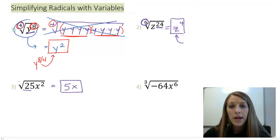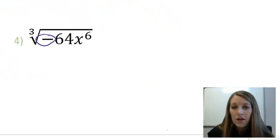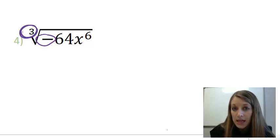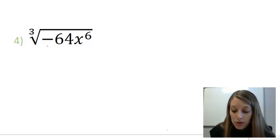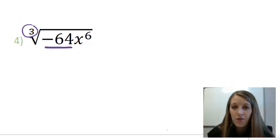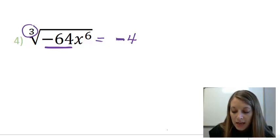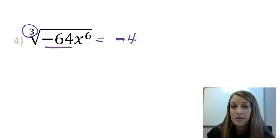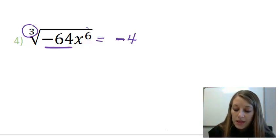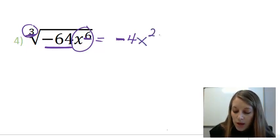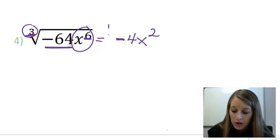In example 4, you might instantly think no answer because I have a negative involved, but that's not true because this is an odd power. I can take an odd power of a negative number. So again, let's just look at it piece by piece. What is the cube root of negative 64? So I need something times itself 3 times to give me negative 64. And the answer to that is negative 4. Negative 4 times negative 4, 2 times gives me positive 16, and positive 16 times a third negative 4 gives me negative 64. And then this guy here, again, you just take your inside power and divide it by your outside root. 6 divided by 3 gives me 2. So my overall answer is negative 4x squared in this example here.